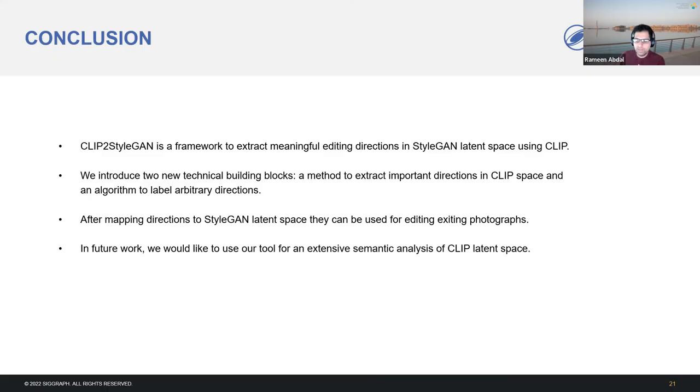In conclusion, we present CLIP to StyleGAN as a framework to extract meaningful edit directions in StyleGAN latent space using CLIP. We introduce two new technical blocks: a method to extract important directions in CLIP space and an algorithm to label arbitrary directions. After mapping these directions to StyleGAN latent space, they can be used to edit existing photographs. In future, we would like to use our tool for an extensive semantic analysis of the CLIP latent space.